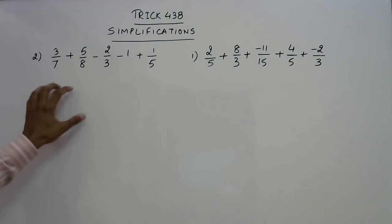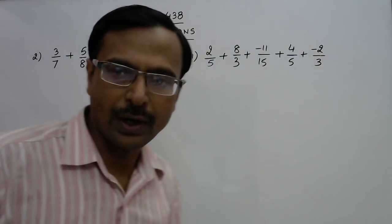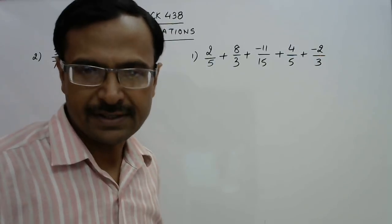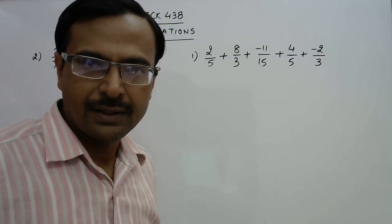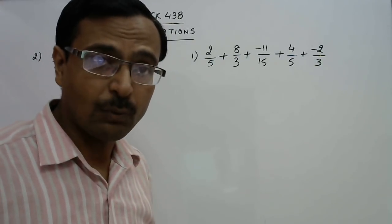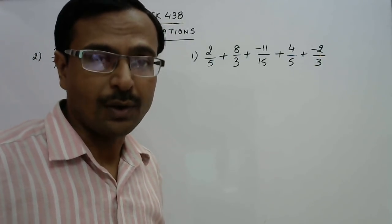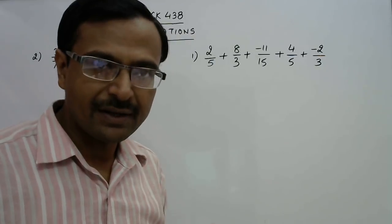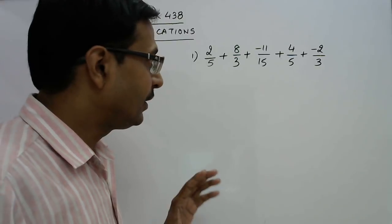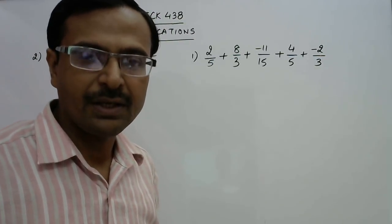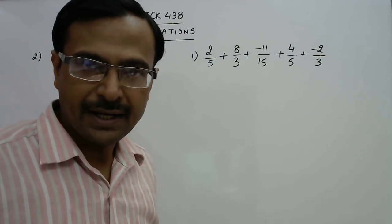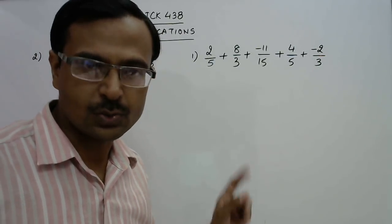Likewise we have five rational numbers here and again simplification is required to solve this. Now how much time you think you will take to simplify this? On average this question consumes nearly one minute to solve. But if you are aware of basics of taking LCM then the time used in taking LCM can be saved and only the time used in adding and subtracting integers will be required to solve this question.